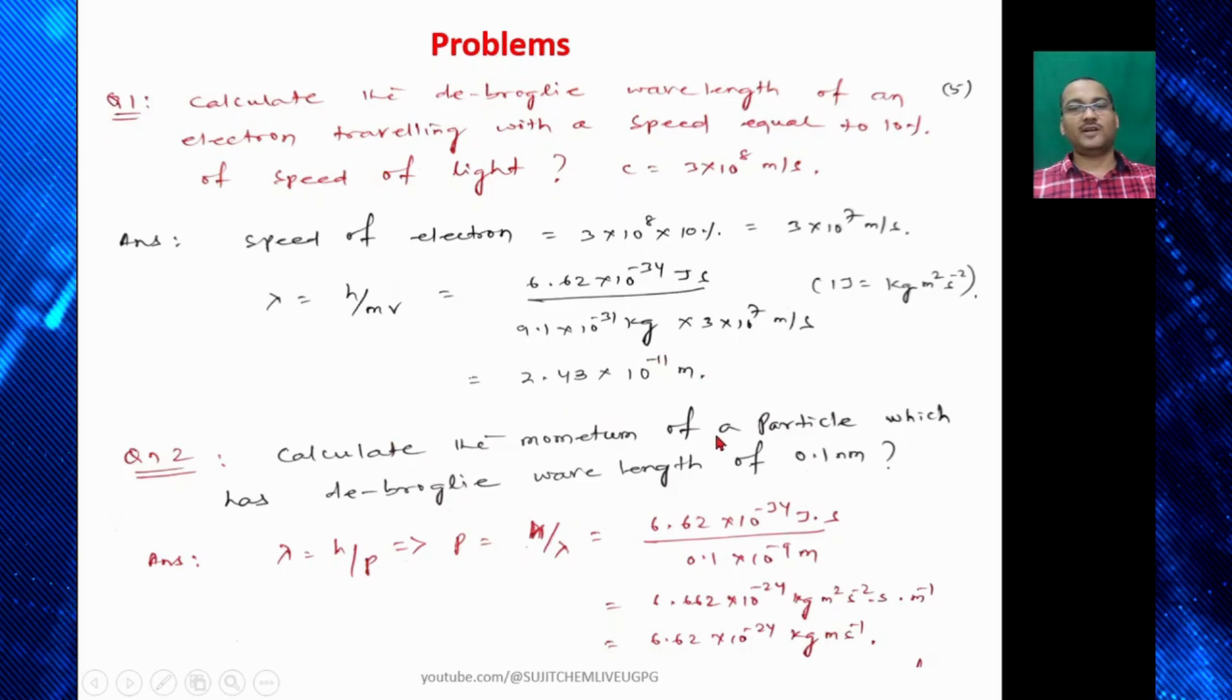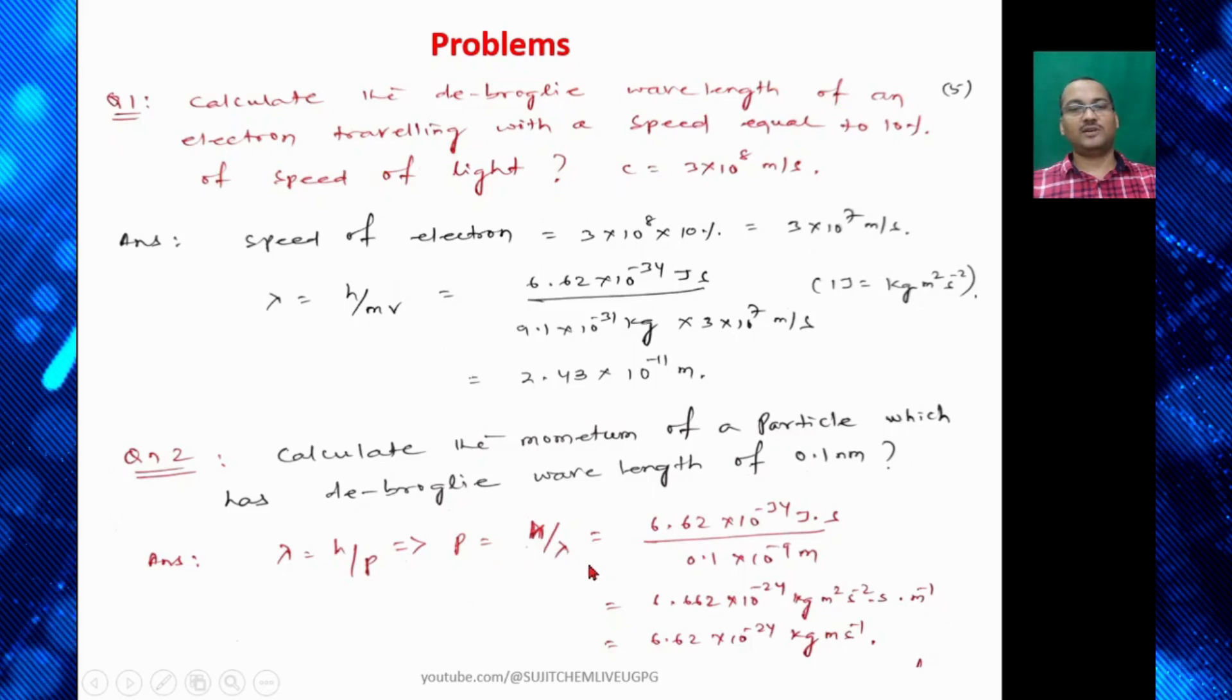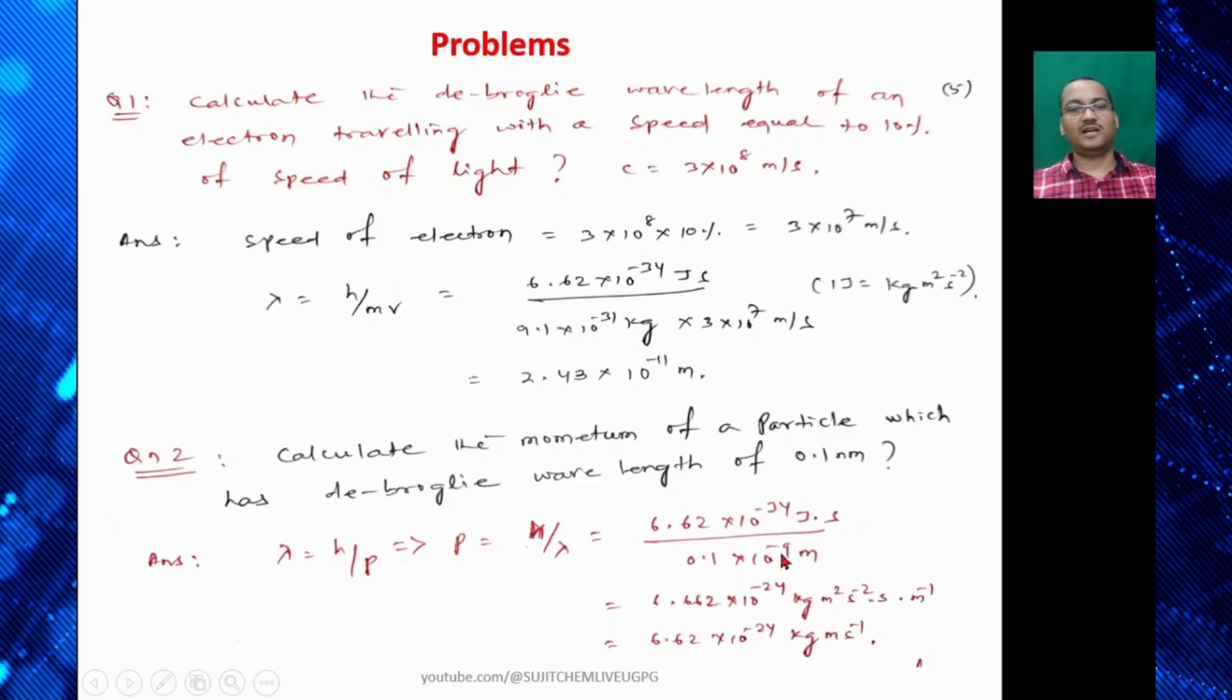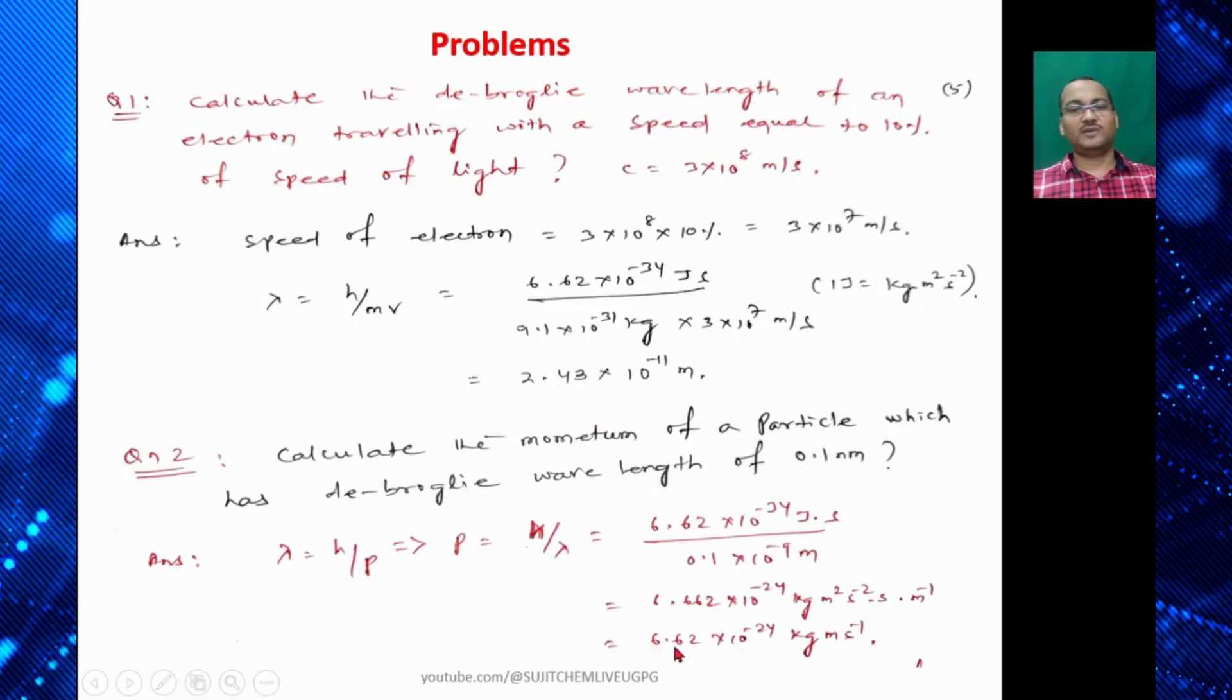Similarly calculate the momentum of a particle which has de Broglie wavelength of 0.1 nanometer. So we know λ = h/P or P = h/λ. So 6.62×10⁻³⁴ joule second divided by λ is 0.1×10⁻⁹ meter. So which is found to be 6.62×10⁻²⁴ kg meter per second.